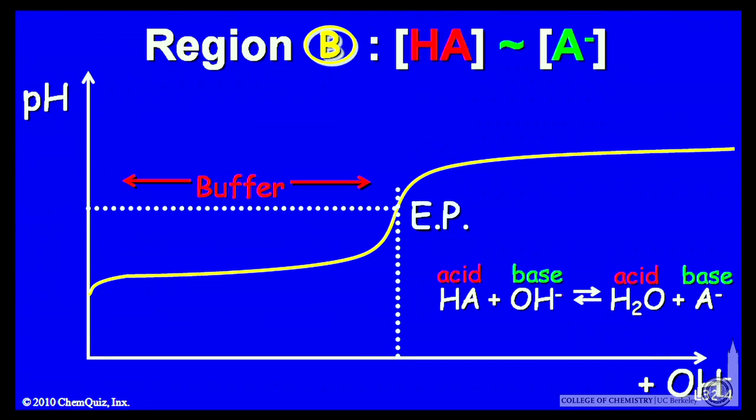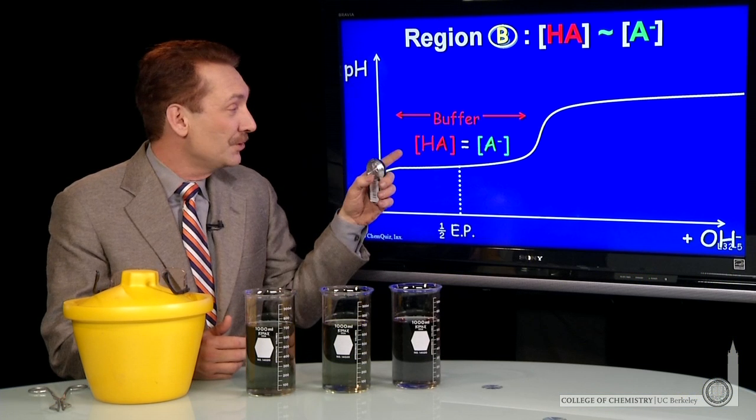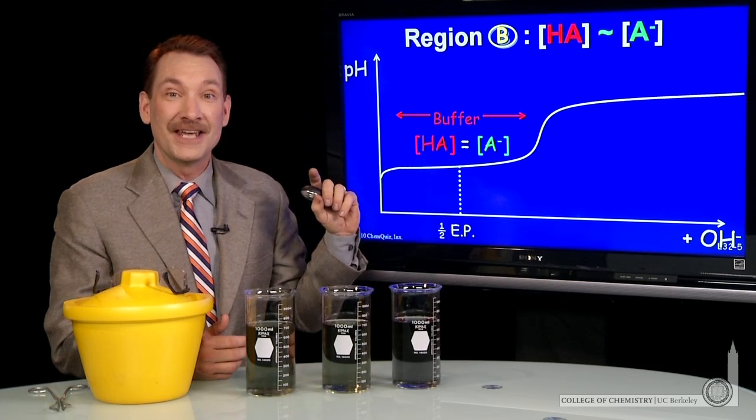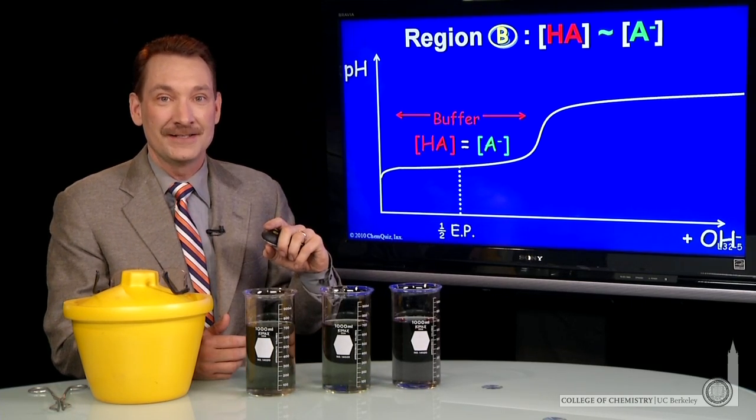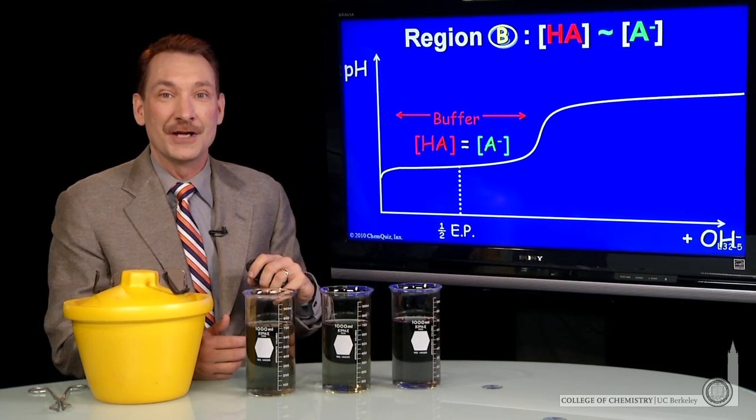This buffer region occurs about halfway to the equivalence point. That's the center of the buffer region, where you've converted half of the acid into the conjugate base and those concentrations are equal.